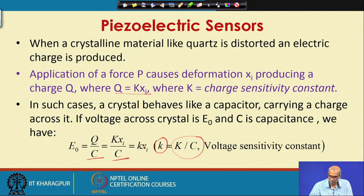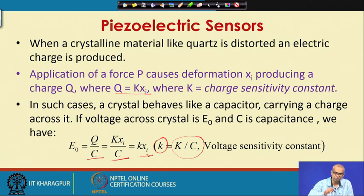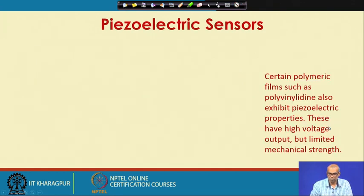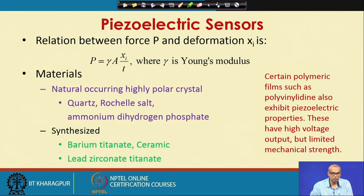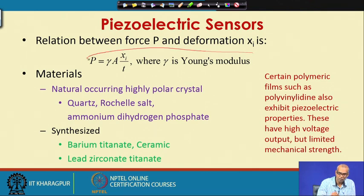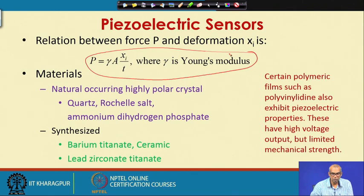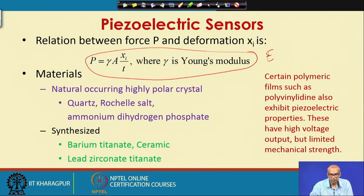Let us define a new constant: charge sensitivity constant divided by capacitance, represented by small k, known as the voltage sensitivity constant. So there are two constants — charge sensitivity constant and voltage sensitivity constant. The voltage E0 formed across the crystal equals the voltage sensitivity constant multiplied by the deformation xi. The relation between force P and deformation xi is: P equals gamma (Young's modulus) times area times deformation divided by t, which is the thickness of the piezoelectric material.